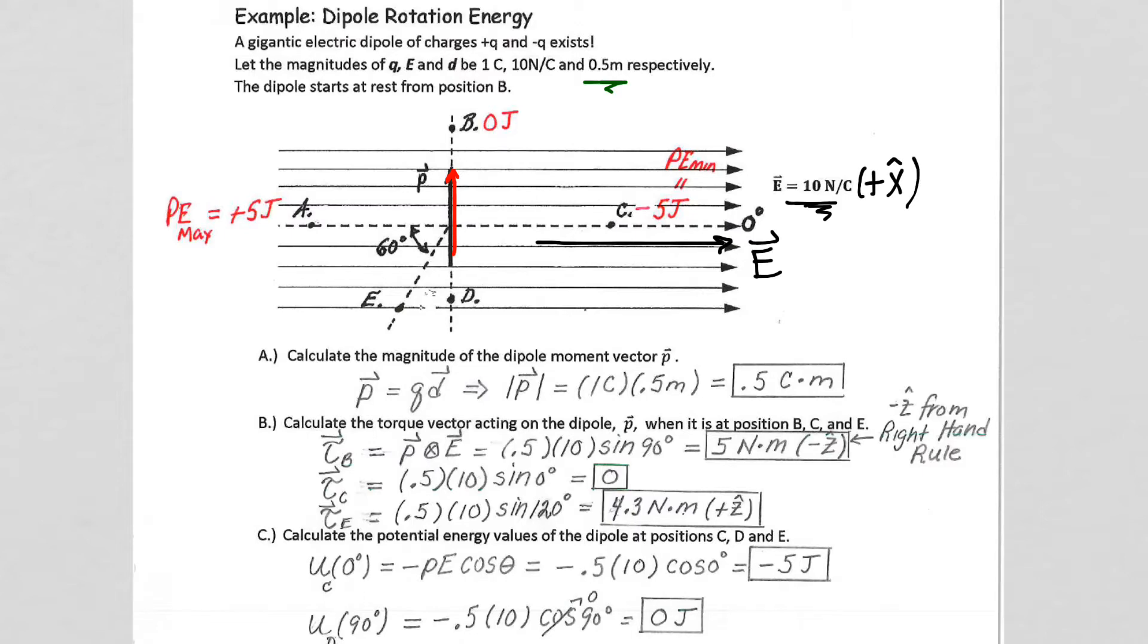Well, let's see what they're asking us to solve for. The first thing they ask us to solve for is the magnitude of the P vector. So the magnitude of the P vector is Q times D. It's a 1 coulomb charge. We are given the 1 coulomb up here. The D, as we said, was the half meter, so we have 0.5 coulomb meters for the dipole value.